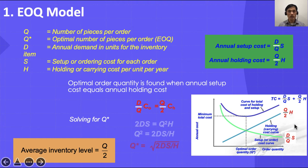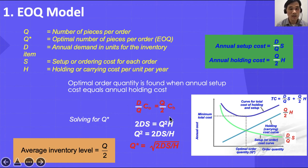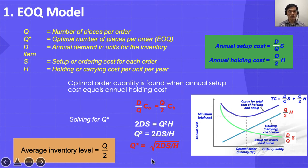EOQ is the point where handling cost and setup cost intersect. You set these two costs equal and solve for Q. The result is the Economic Order Quantity: Q* equals the square root of 2 times D times S over H. Average inventory level is Q over 2, and adding the costs gives you total cost.